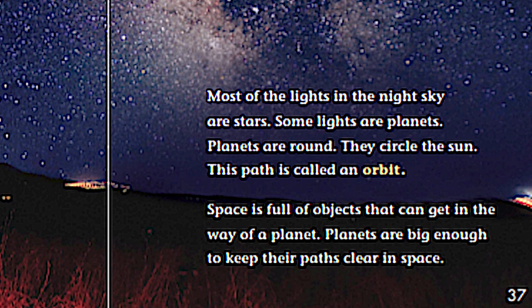Take a look at that word, orbit. Say it, orbit. See how it's highlighted for you? Space is full of objects that can get in the way of a planet. Planets are big enough to keep their paths clear in space.